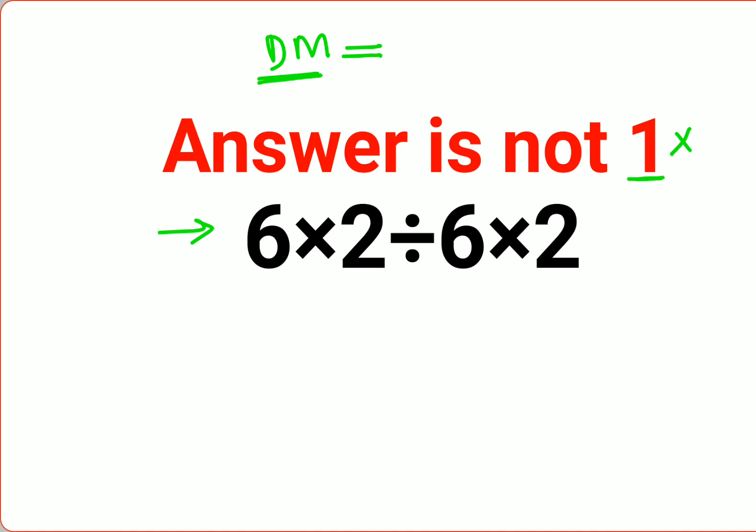In these kinds of sums you just do left to right, means you will do the operation which happens first from your left hand side. So first we will do 6 into 2 that gets you 12 divided by 6 into 2. Now this is where a lot of people got stuck and then they thought okay this is 12 and this is also 12, so we do 12 divided by 12 and that is wrong.